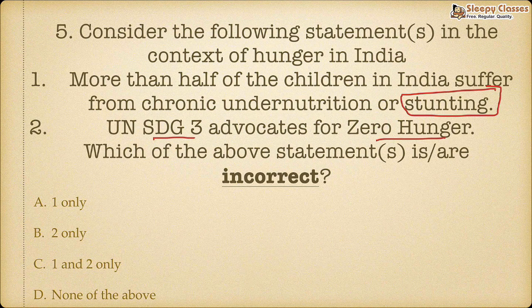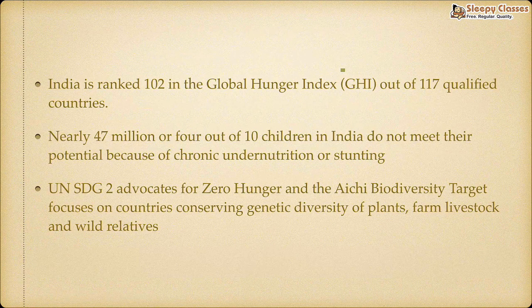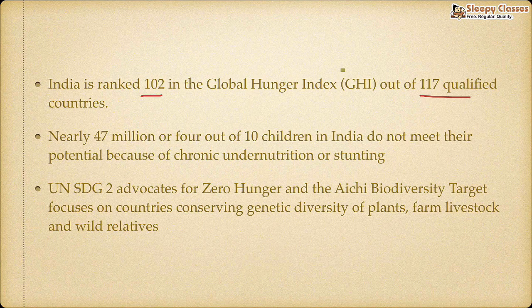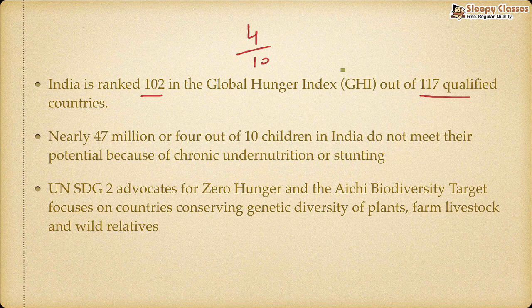The correct answer is C — both statements 1 and 2 are incorrect. The Global Hunger Index was recently released where India's rank is 102nd out of 117 qualified countries, which is very abysmal. It is 47 million, or 4 out of 10 children — not 50%, but less than 50%. Please pay attention to such numerical details as exams sometimes ask such factual questions about health and nutrition.